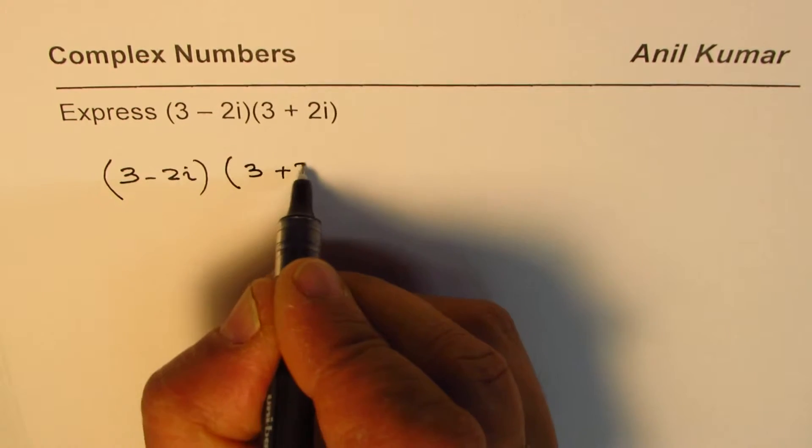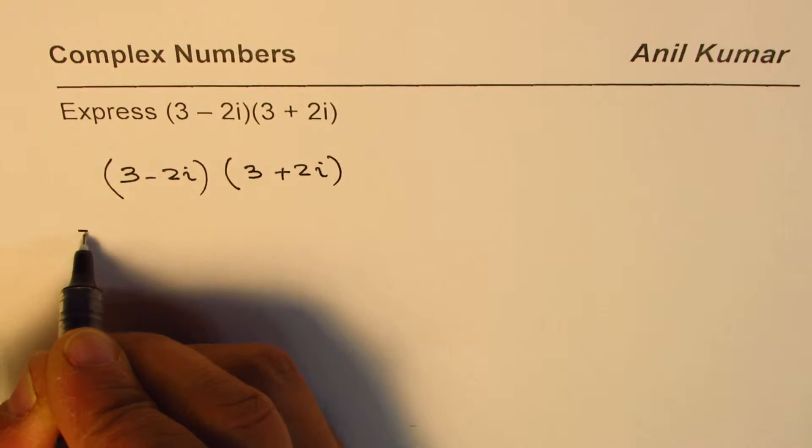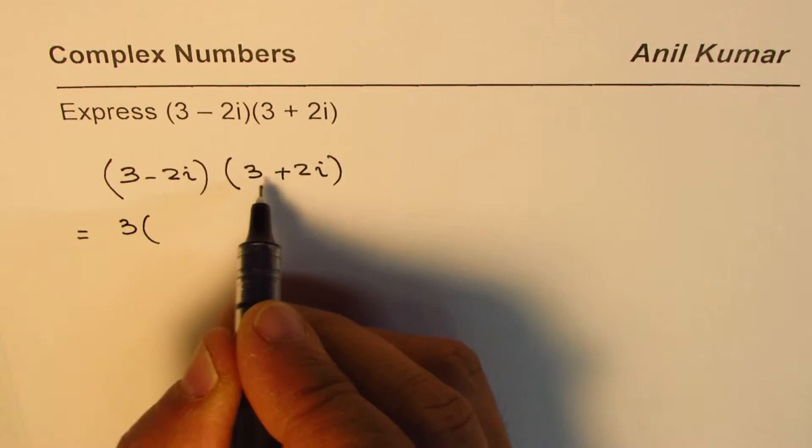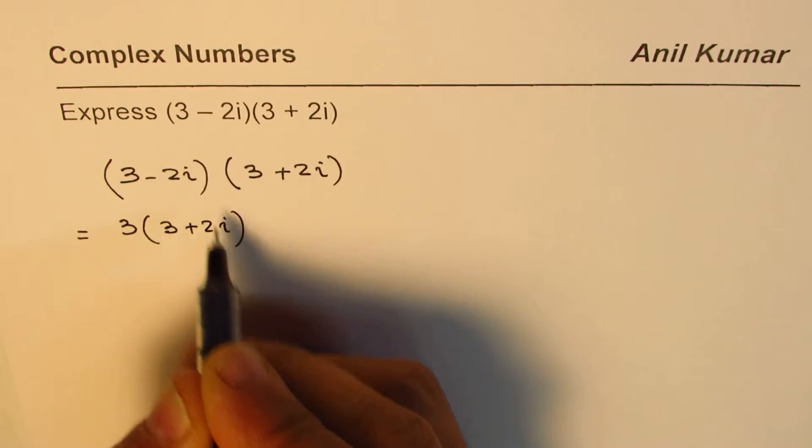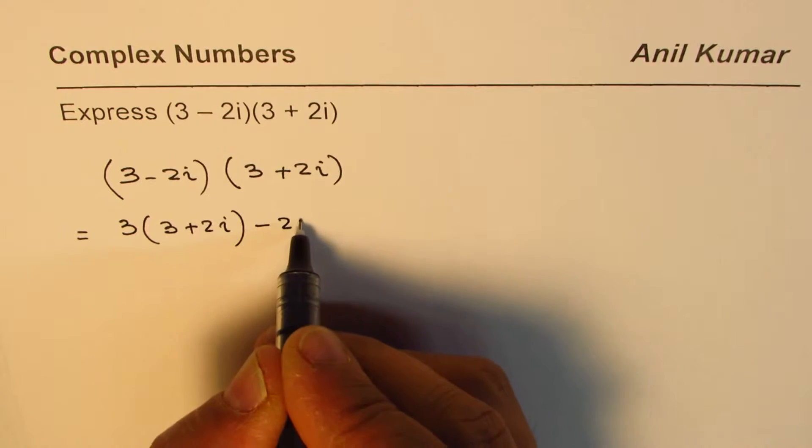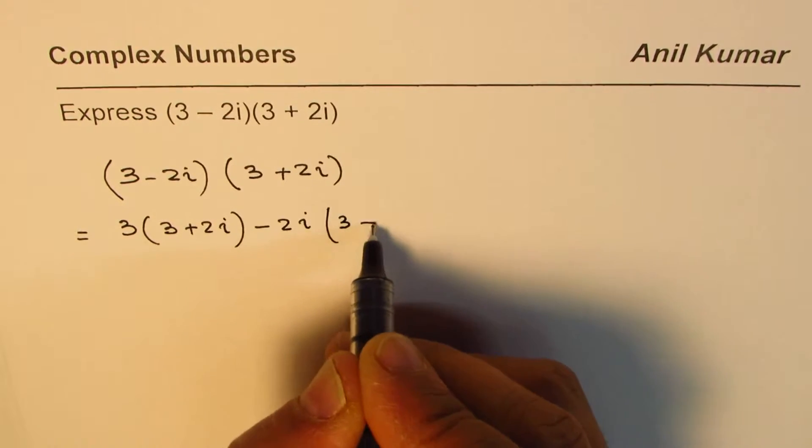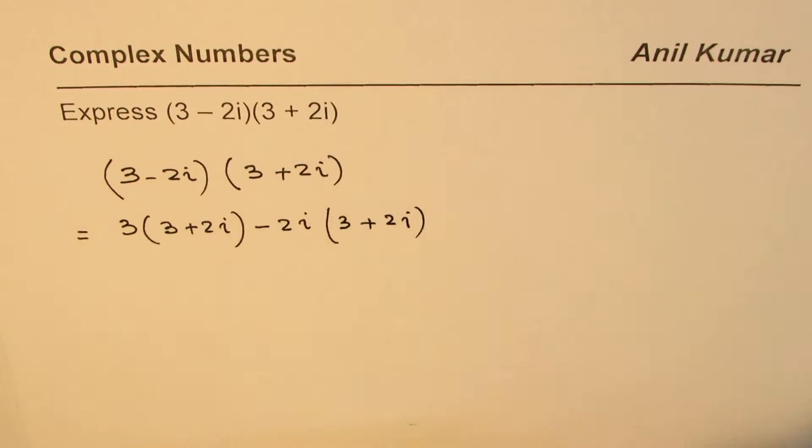So we do 3 times 3 plus 2i first, and then we do minus 2i times 3 plus 2i. That is the distributive property.